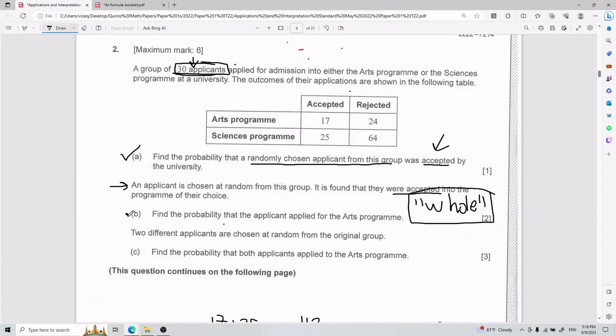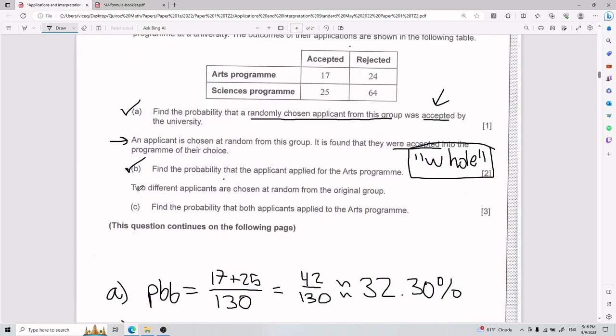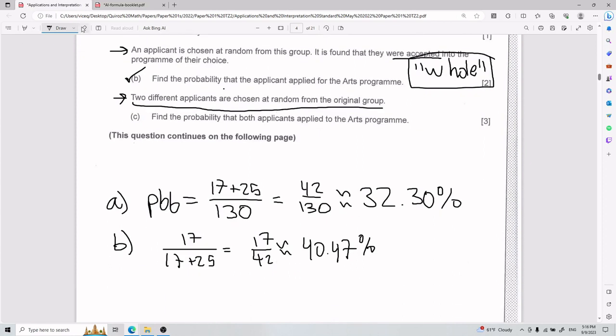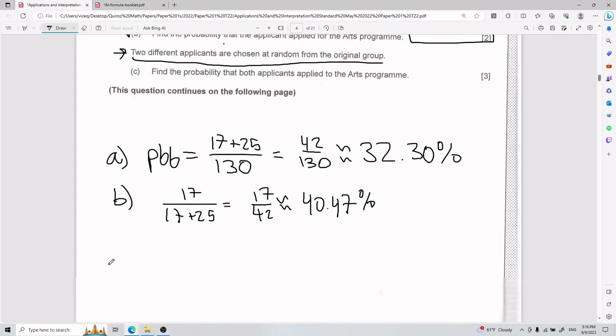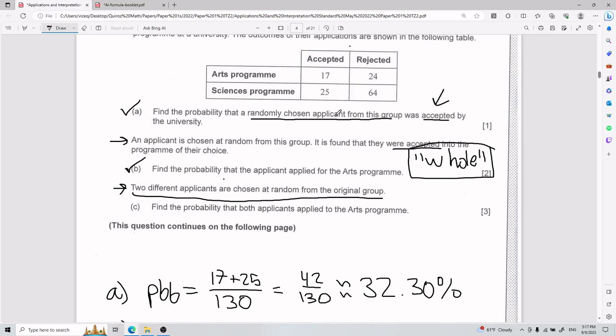They tell us that two different applicants are chosen at random from the original group. Find the probability that both applicants apply to the arts program. So I need to pick two in a row. Now, because we have two in a row, let's go one by one. So for the first one, or actually, let me phrase it differently. If I picked two that applied to the arts program, notice that it's just applied. Keyword, applied, not accepted, just applied.